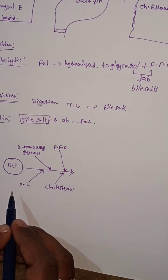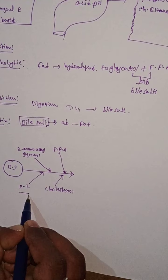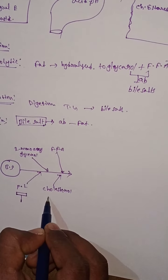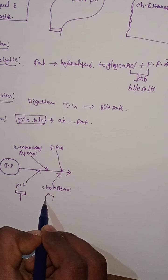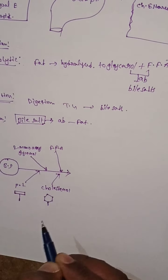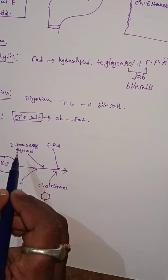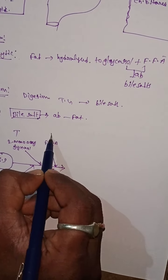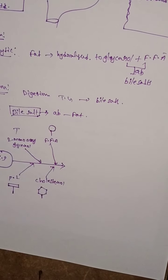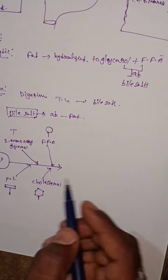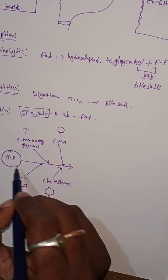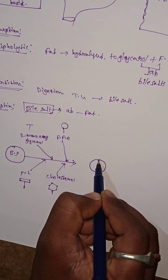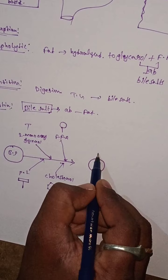For the diagrammatic representation: the phospholipid structure, cholesterol structure, monoacylglycerol structure, and free fatty acid structure are shown. Bile salts combine with free fatty acids. This binding process occurs before the intestine — in the mouth or the stomach.